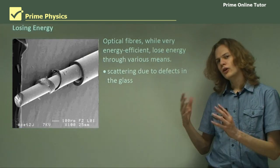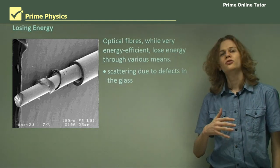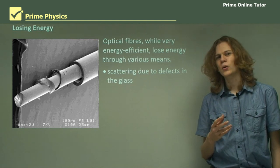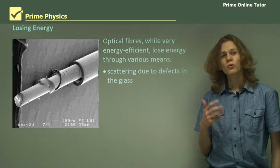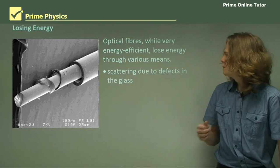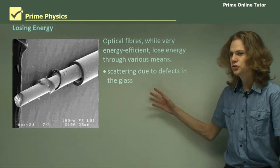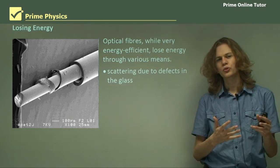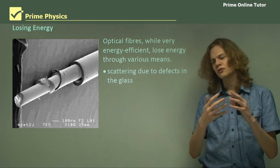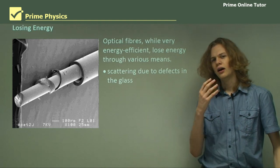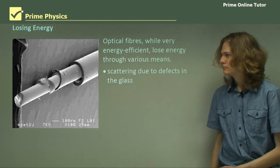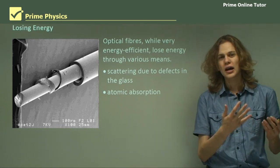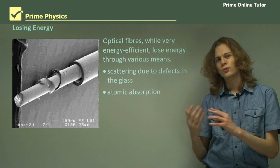Now optical fibers are of course very energy efficient because they don't lose energy due to refraction. However, they can still lose energy — there's no way to get perfect energy transmission. Some of the ways in which optical fibers lose energy are scattering due to defects in the glass. We might move through the molecules of glass in slightly the wrong way and get the light scattering backwards. We might get light being absorbed by the atoms in the glass and then re-emitted in different directions.